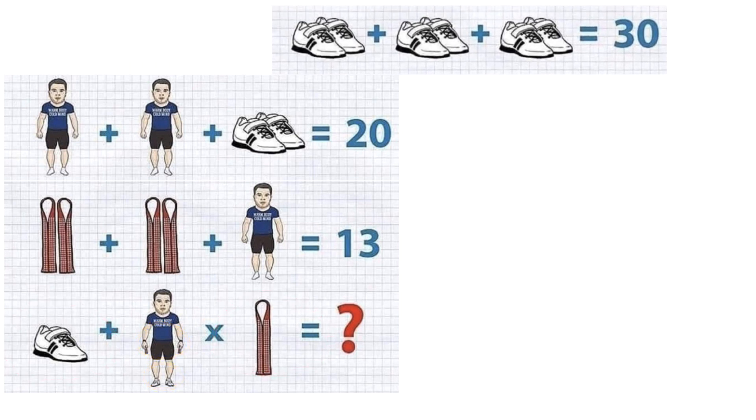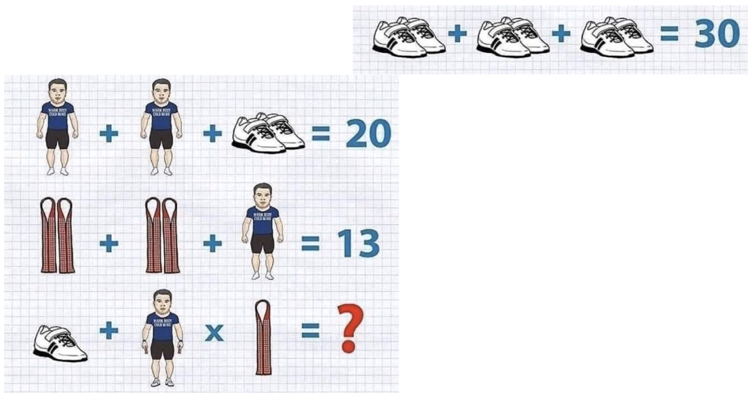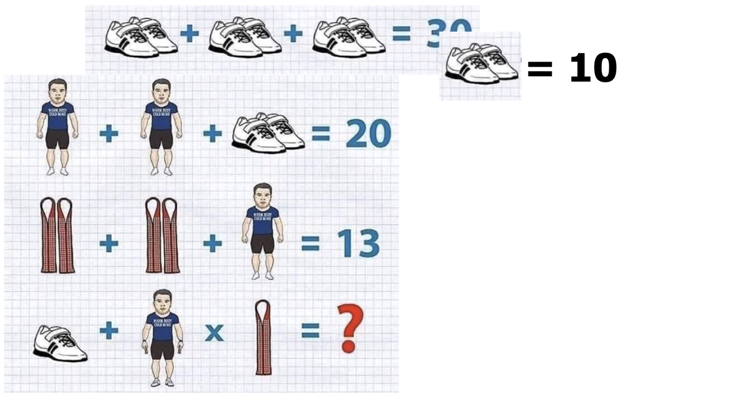Now let us solve for the value of each item. From the first equation, we can solve that the pair of shoes equals 10. This is because sum of three pairs of shoes is 30 and hence one pair of shoes must be 10.